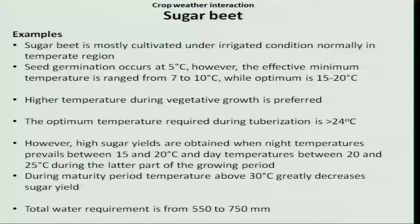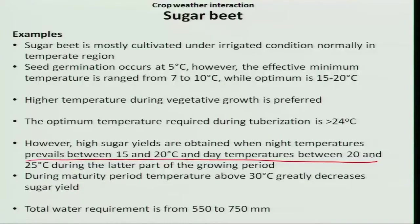The next phase is the ripening or maturity phase. In general, most sugar-producing crops require cool temperature during the ripening stage. High sugar yields are obtained when night temperature is 15 to 20 degree Celsius and day temperature is between 20 to 25 degree Celsius in the later part of the period. During the maturity period, temperature above 30 degree Celsius greatly decreases the sugar yield.